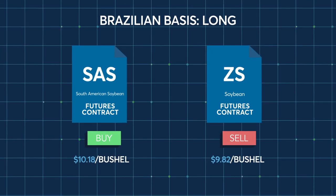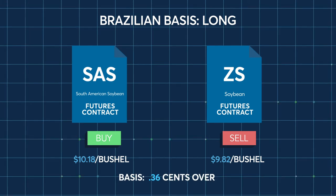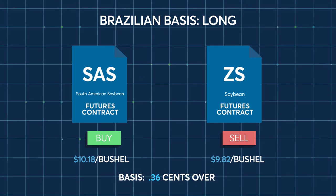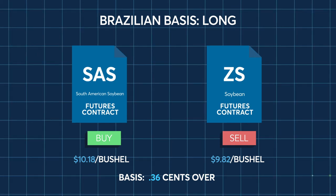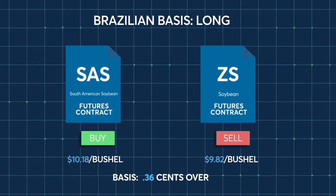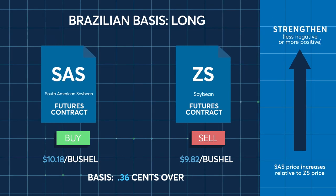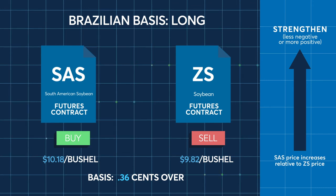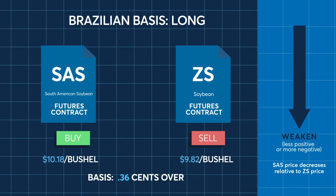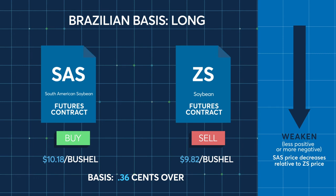If an importer of Brazilian soybeans is concerned that the BASIS is going to increase or strengthen, they could buy South American soybean futures and sell U.S. soybean futures, creating a synthetically long BASIS position. If the spread strengthens, their physical position would lose value, but would be offset with a gain in the spread. If the spread narrows or weakens, their physical position would improve in value, but that gain would be offset with a loss in the spread.